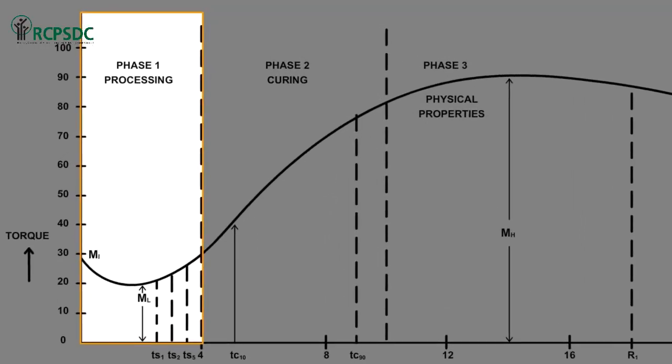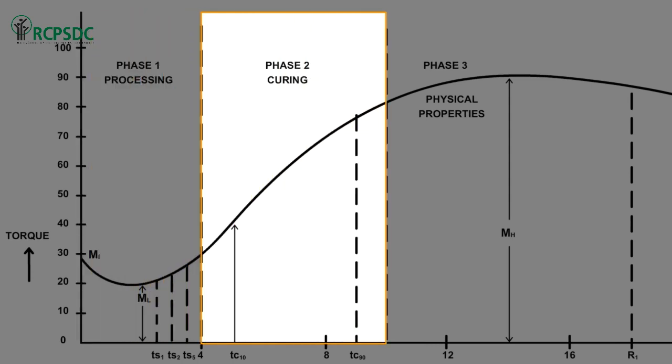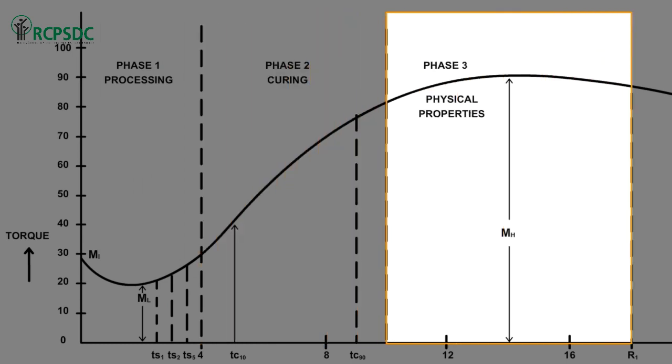Phase 1 gives an indication of the processing behavior of the rubber compound. Phase 2 describes the curing characteristics of the rubber compound. Phase 3 gives a good indication of the physical properties of the rubber compound.